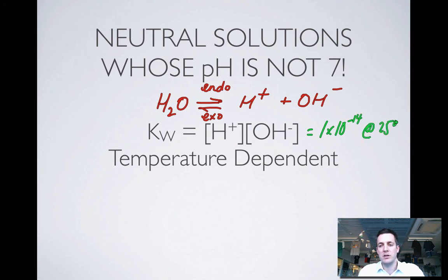We know this equals 1 times 10 to the minus 14 at 25 degrees centigrade. If I increase the temperature of this system, Le Chatelier's principle says the endothermic reaction will be favored because the system will be trying to lower the temperature. So at temperatures greater than 25 degrees centigrade, I'm going to make more of these than I do at 25 degrees. The concentration of H plus is going to rise. If the concentration of H plus rises, then the pH will drop below 7. The solution hasn't suddenly become acidic because I've still got exactly the same number of those two, but the pH has dropped at higher temperatures.